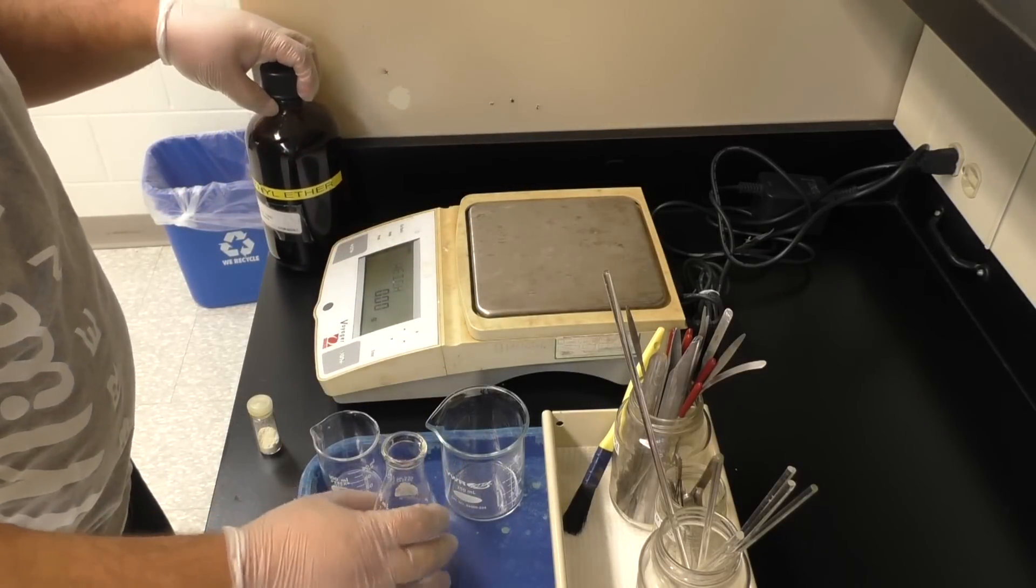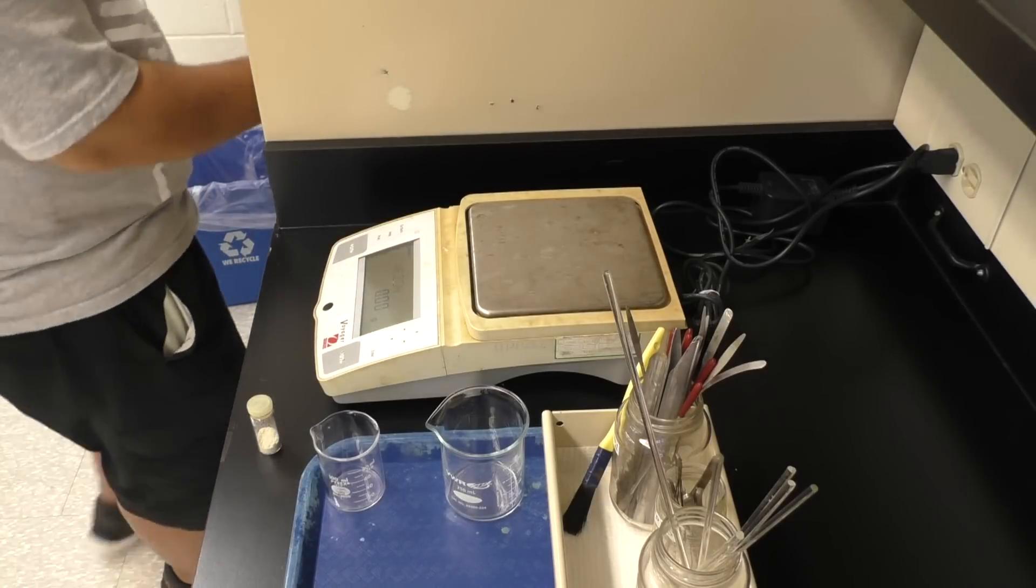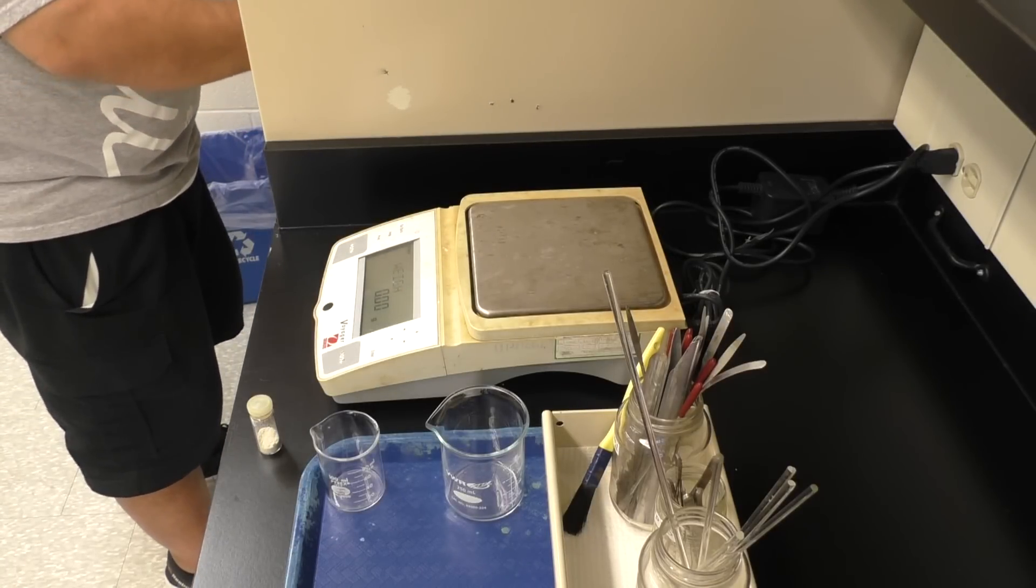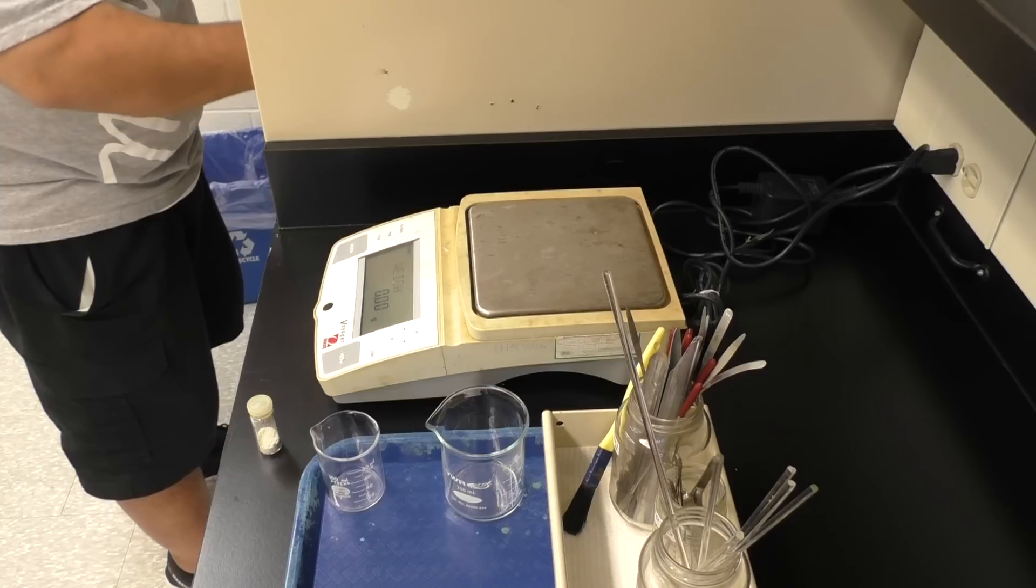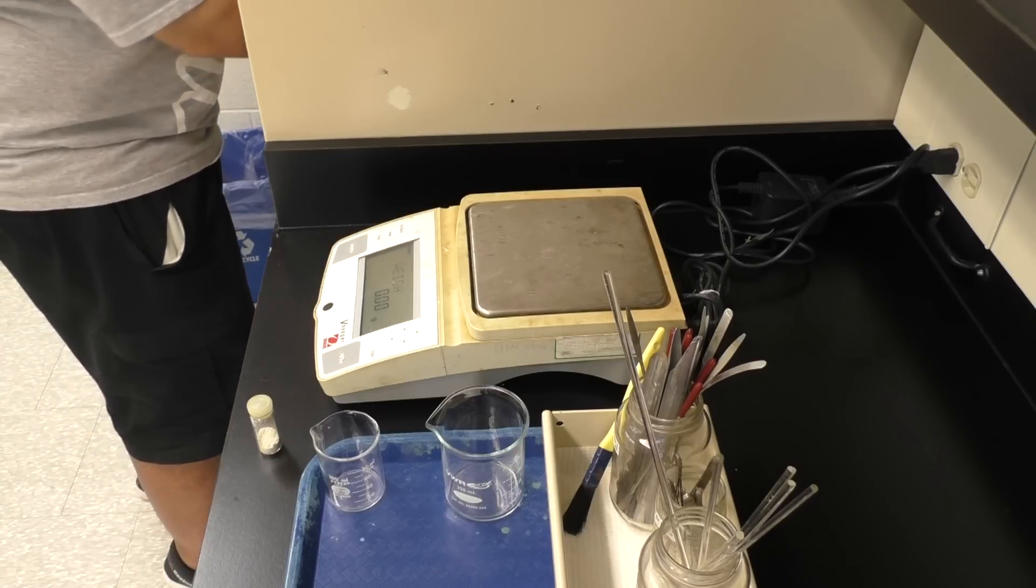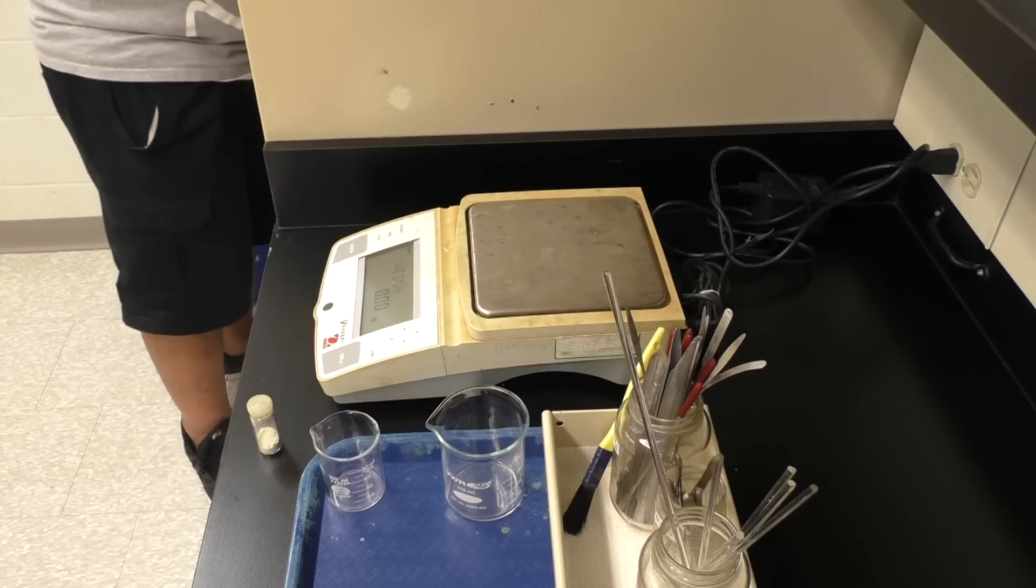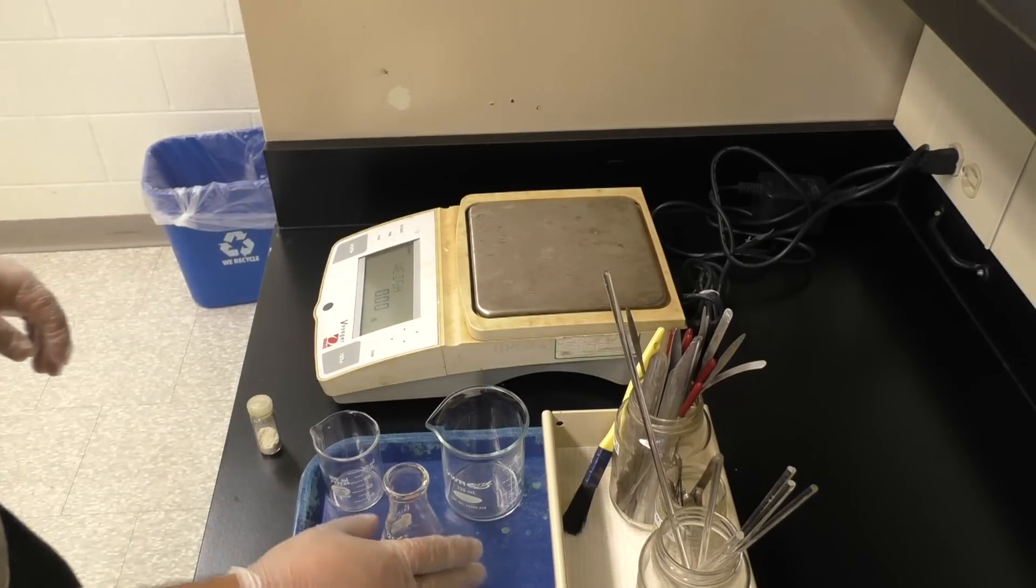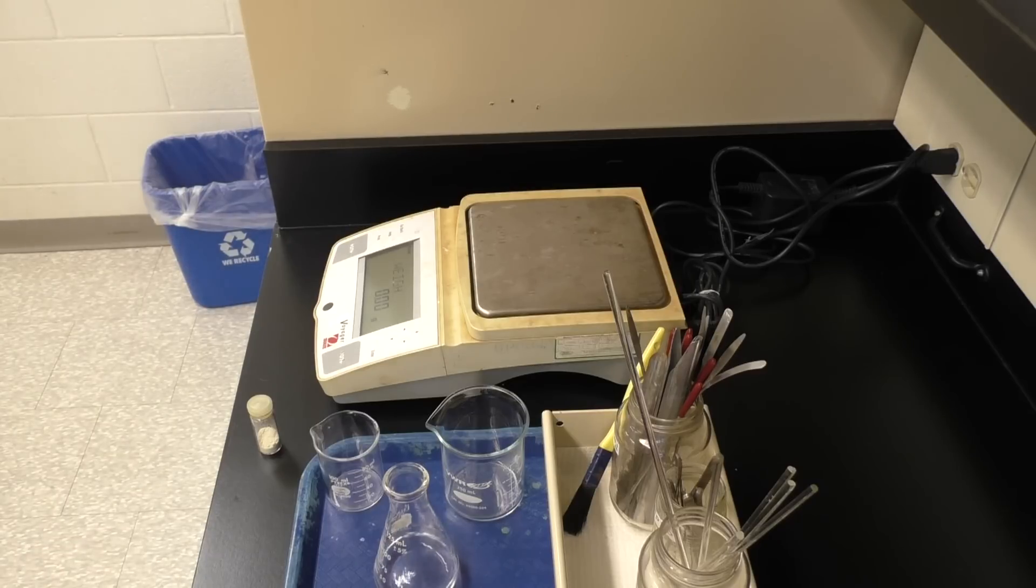In this you're going to need some diethyl ether to help dissolve your unknown, and essentially rinse it out of the vial. So before you go back to your station at the fume hood, make sure you get yourself some diethyl ether, and both you and the person next to you are going to need it. So you can actually save some time by getting enough for both of you.